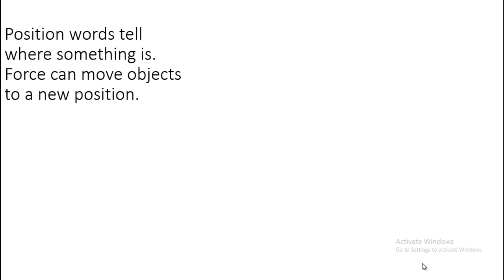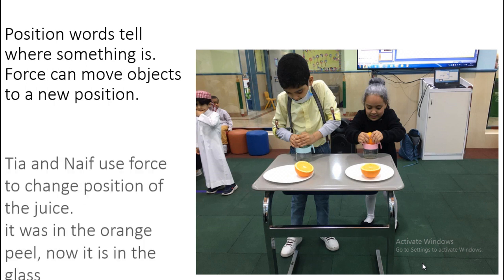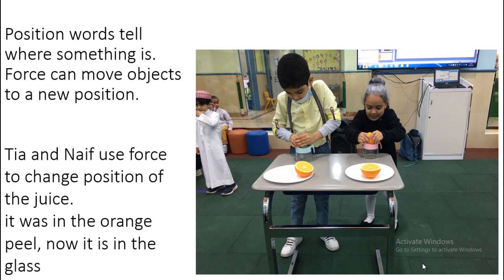Position words tell us where something is. Force can move an object to a new position. Remember when Tia and Naif pushed on the orange peel to take the juice out? They used their force, and their force made the juice change position. Before, the juice was inside the orange peel. After, the juice is outside the orange peel — now it's in the glass.